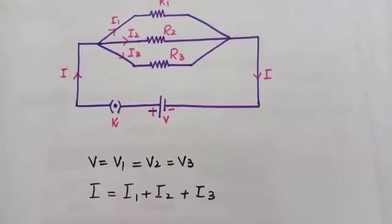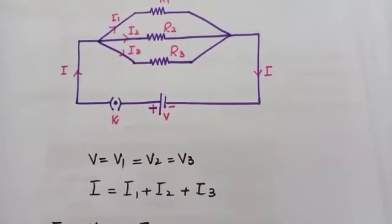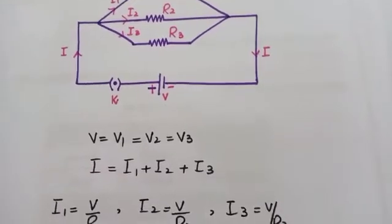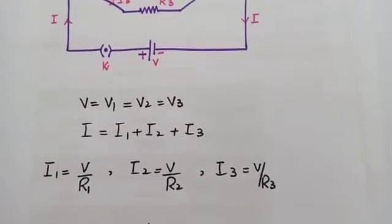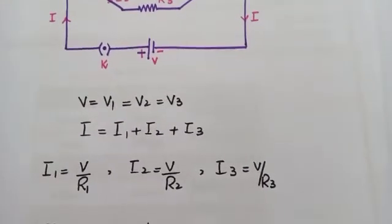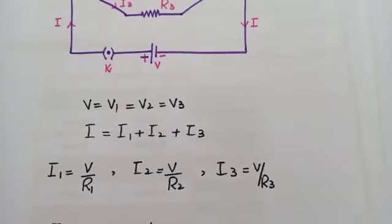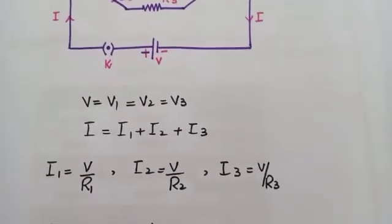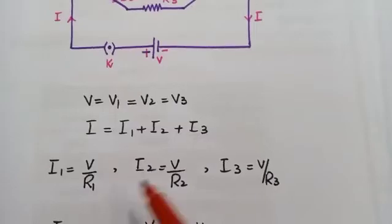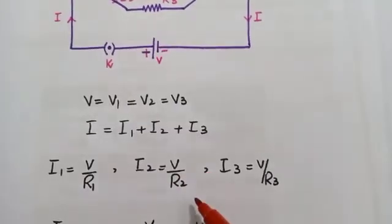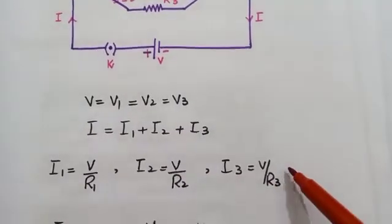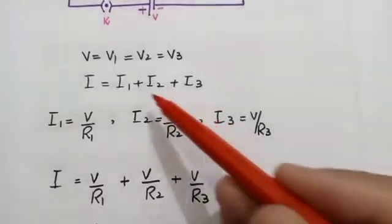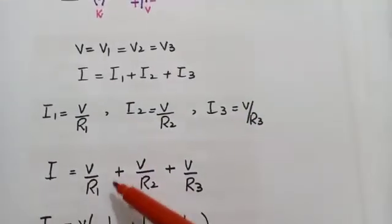The current flowing through the circuit is divided among all the resistors. The total current is equal to the sum of currents in the various resistances: I = I1 + I2 + I3. Since the voltage across each resistor is V, by Ohm's law I = V/R, we can write I1 = V/R1, I2 = V/R2, and I3 = V/R3.